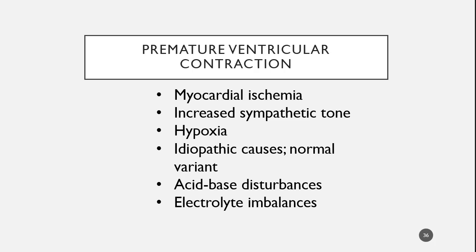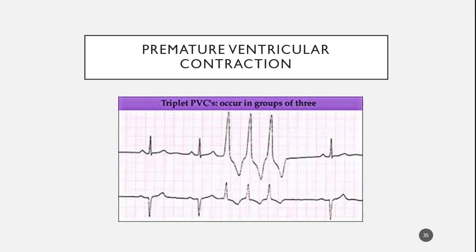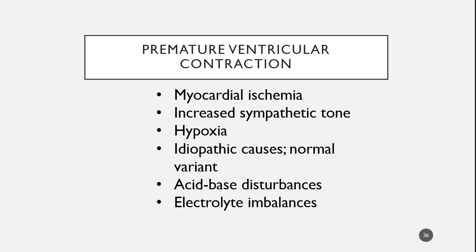The most common cause is myocardial ischemia — a decrease in the oxygenation of the ventricular cells. The second thing that comes into play is increased sympathetic tone, which means an increased heart rate. Depending on whether it's primarily dealing with the atria or the ventricles, your heart rate is going to be faster. And then hypoxia, which leads right back into ischemia.